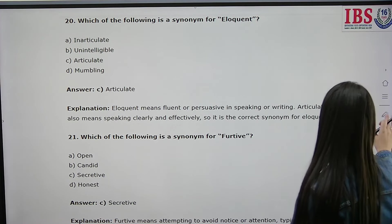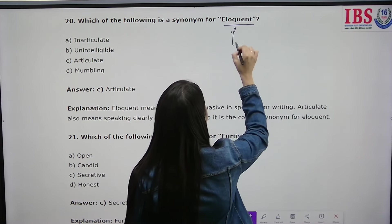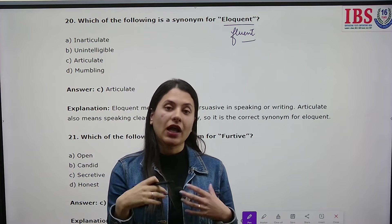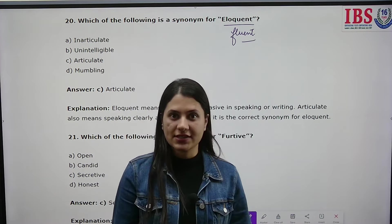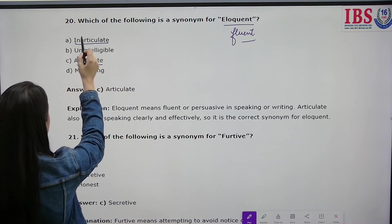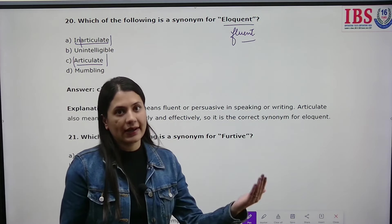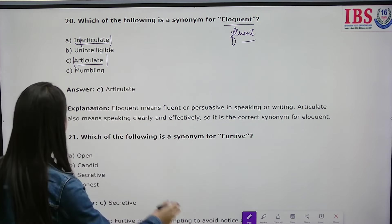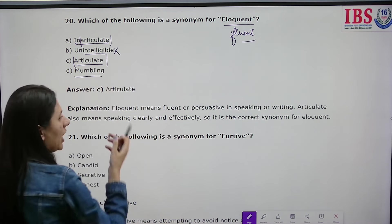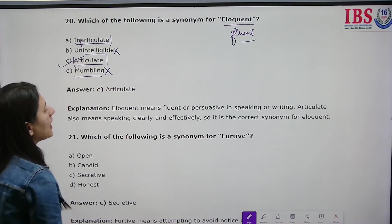Which of the following is a synonym for 'eloquent'? Eloquent means fluent and well-spoken. For example, 'describe this answer to me eloquently.' The options are inarticulate, articulate, unintelligible, and mumbling. Inarticulate, unintelligible, and mumbling all mean unclear speech. Articulate means speaking fluently — for example, 'he can talk in English articulately.' So articulate is the correct answer.